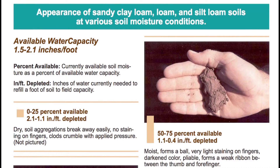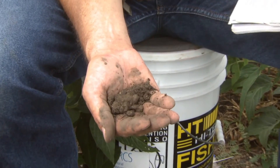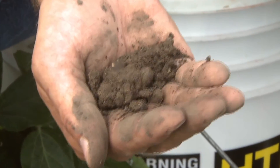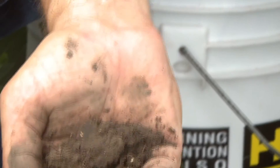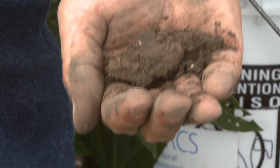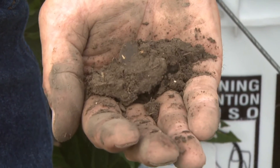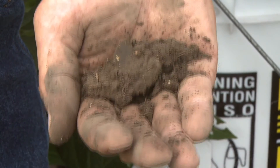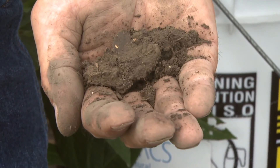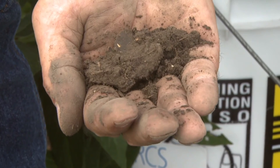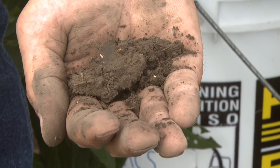So in this example, if it's dry and aggregations break away easy and no staining on my fingers — in this case I do have some staining on my fingers — then it would be at 25% or less, so we're something slightly greater than that. If it's slightly moist and forms a weak ball with rough surfaces, with no water staining on your fingers and few aggregated soil break away, it would be 25 to 50% available. In this case I would say that fits almost exactly perfect, so we're something between 25 and 50% available.